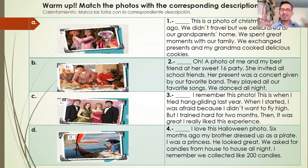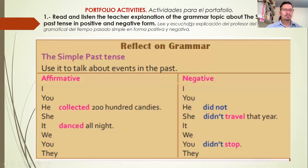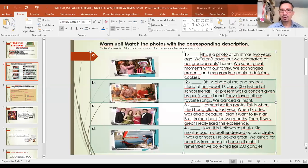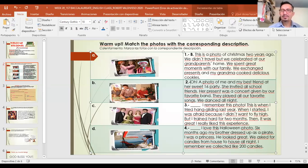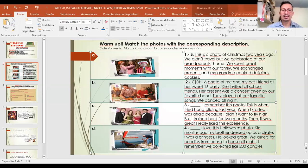Now I challenge you to match the picture with the description. Number one is about Christmas — which photo corresponds? That's right, letter B. Picture B. Number two — the description is about the 16th birthday party. That's right, letter C.